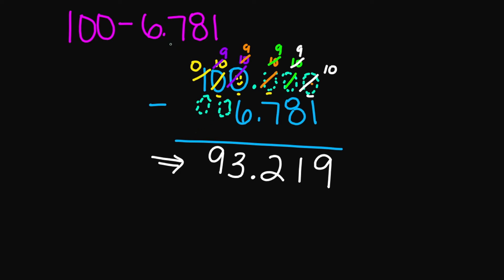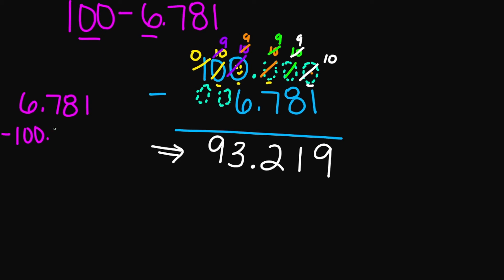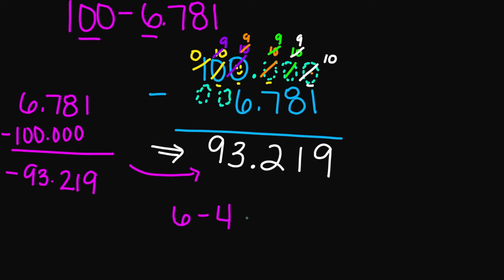Now remember guys, when you are subtracting decimals, make sure you subtract the smaller number from the larger number. We can see that 100 is greater than 6. If you were to rewrite this problem as 6.781 minus 100 and added your zeros, you will get the same thing except you will get a negative 93.219. It only makes sense mathematically — if I have 6 minus 4 that's 2, but 4 minus 6 gives you negative 2.